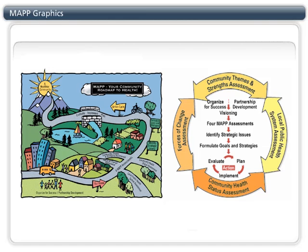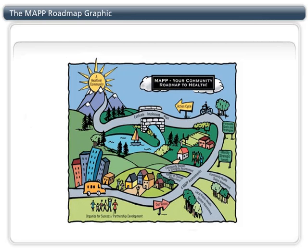Let's take a closer look at the roadmap model first. The phases of MAP are shown along a road that leads to a healthier community. The four MAP assessments are shown on the main road and represent the core activities in the process. MAP is a way to define your interim goals between where you are and a healthier community. It also helps prioritize, set realistic action plans to get there, and celebrate your successes along the way.